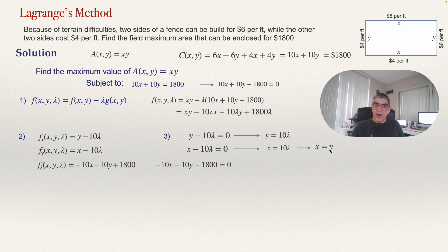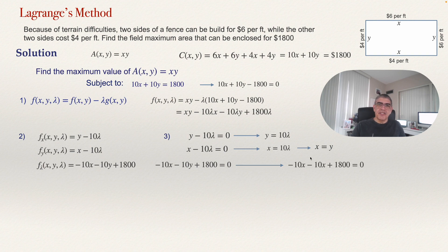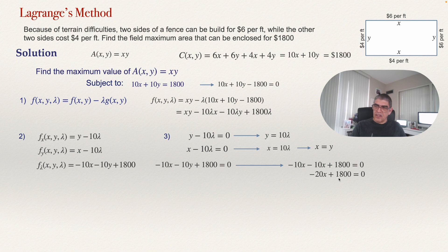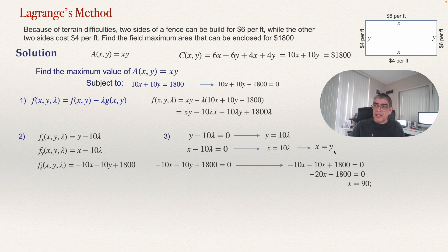Since X equals Y, substitute Y with X in the third equation: minus 10X minus 10X plus 1800 equals zero, giving minus 20X plus 1800 equals zero. Solving: X equals 90. And because Y equals X, we also get Y equals 90.